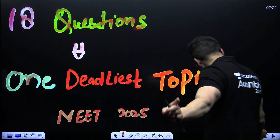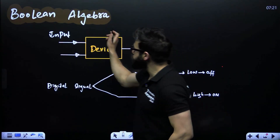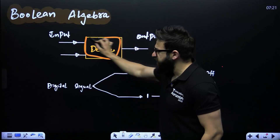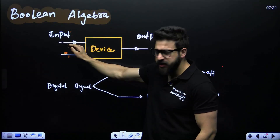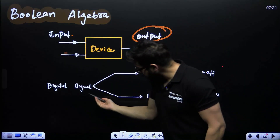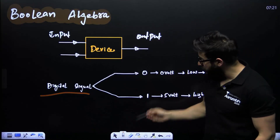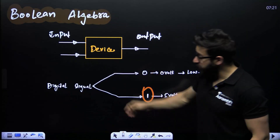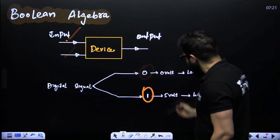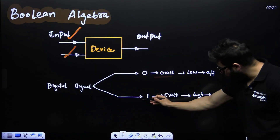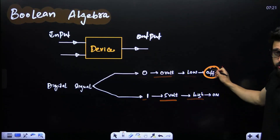Let's focus first on Boolean algebra. Suppose we have a device we are creating in which we give some input A and B — whatever it may be — it will give us the output. This input or output is what we call a digital signal. This digital signal will be only in the form of zero or one. A can be either zero or one, B can be either zero or one. Zero means zero volts, one means five volts; zero means low, one means high; zero means off, one means on.